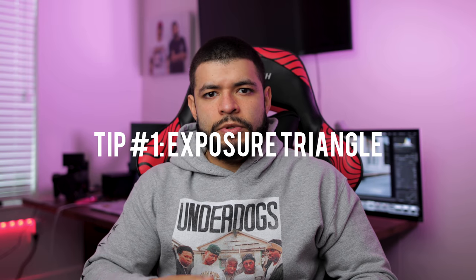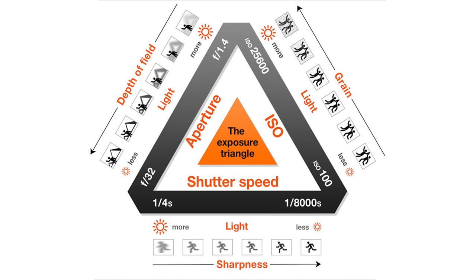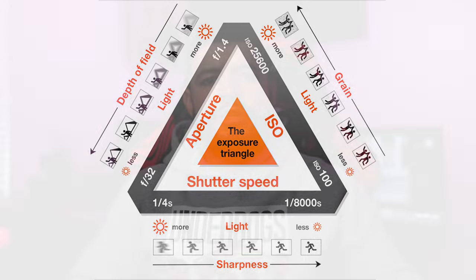Tip number one is going to be learning the camera basics — specifically, learning your exposure triangle. The exposure triangle is made up of three things: your aperture, your shutter speed, and your ISO. With shutter speed, the higher up you go, the less light that's allowed into the sensor. The slower your shutter speed, the more light is allowed in and the more motion blur you create.